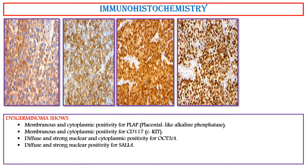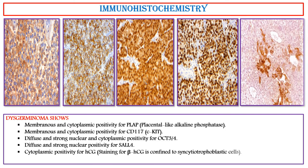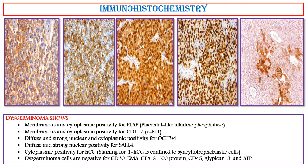Diffuse and strong nuclear positivity for SALL4. Cytoplasmic positivity for beta-HCG is confined to syncytiotrophoblastic cells. These germinoma cells are negative for CD30, EMA, CEA, S100 protein, CD45, Glypican-3, and alpha-fetoprotein.